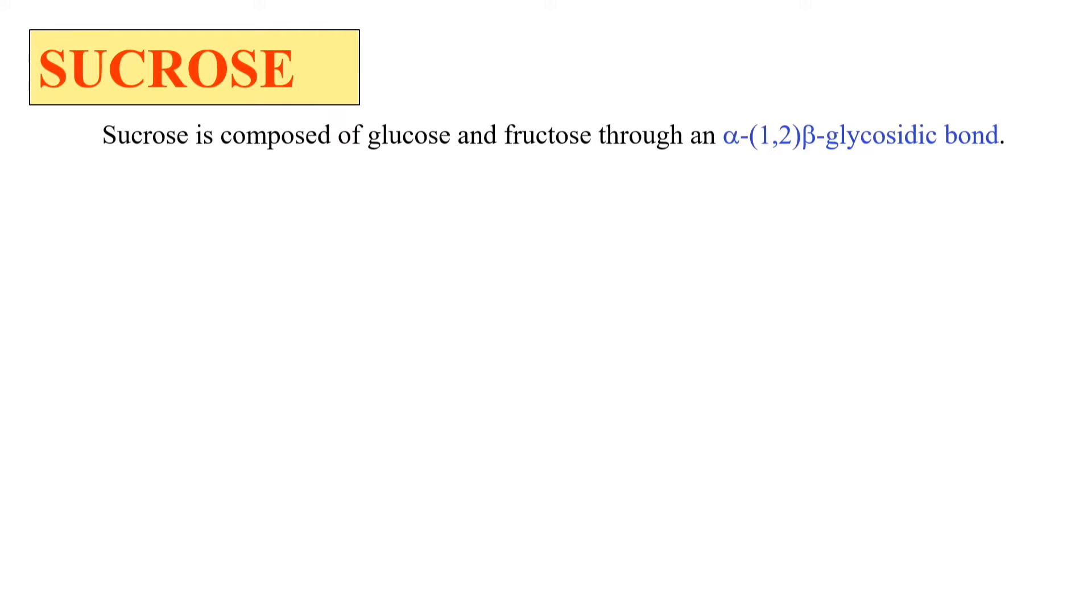The structure of sucrose consists of glucose and fructose which are linked with each other by a 1-2 beta-glycosidic linkage. Here, this is the glucose molecule, the alpha-D-glucose molecule.